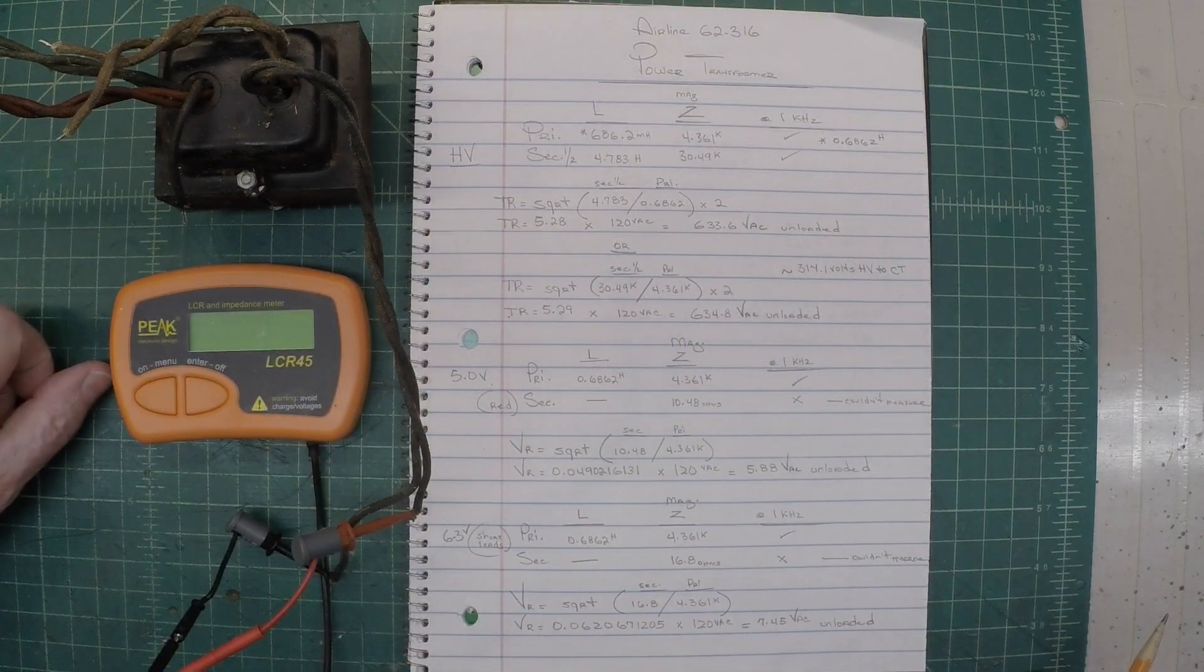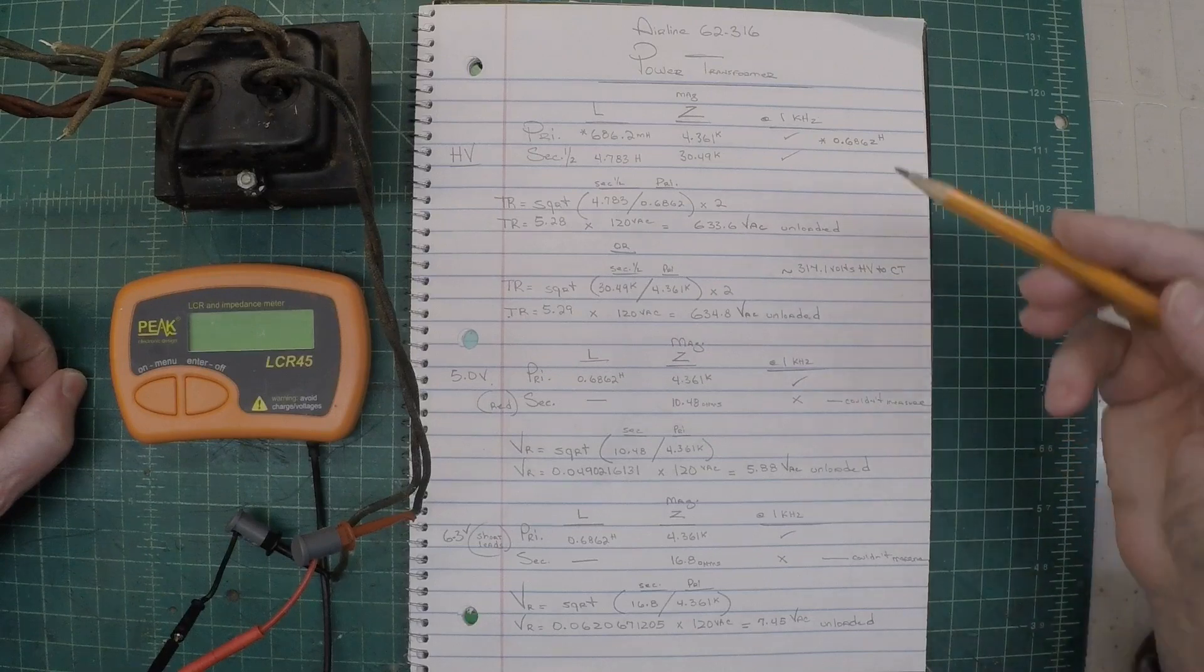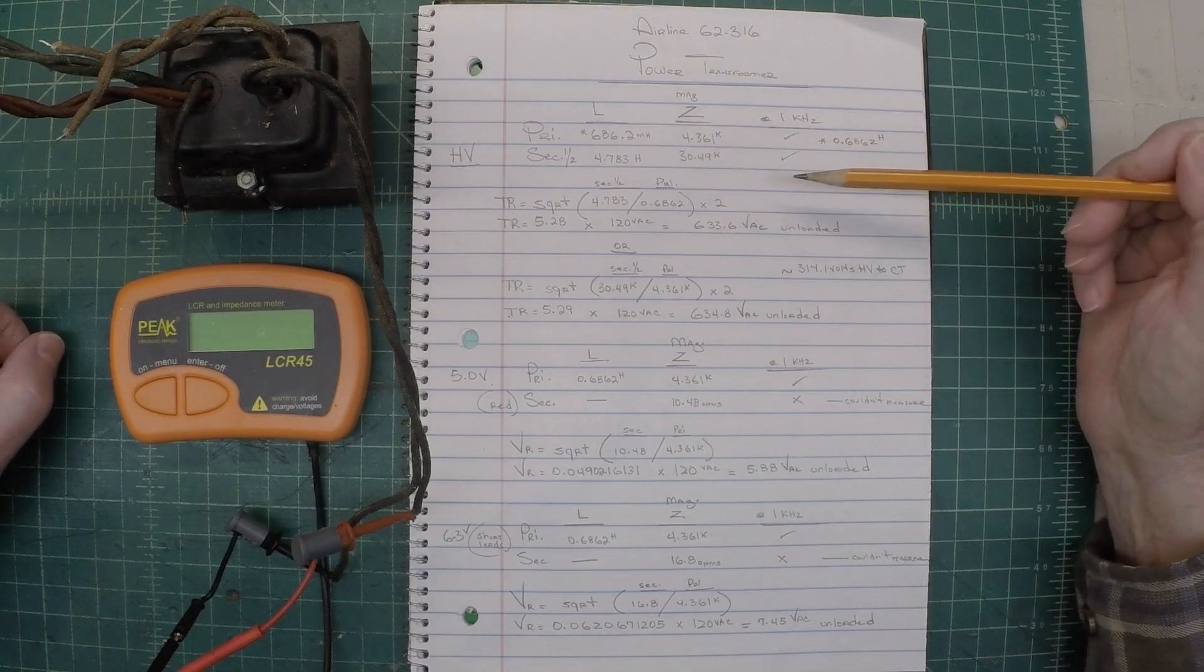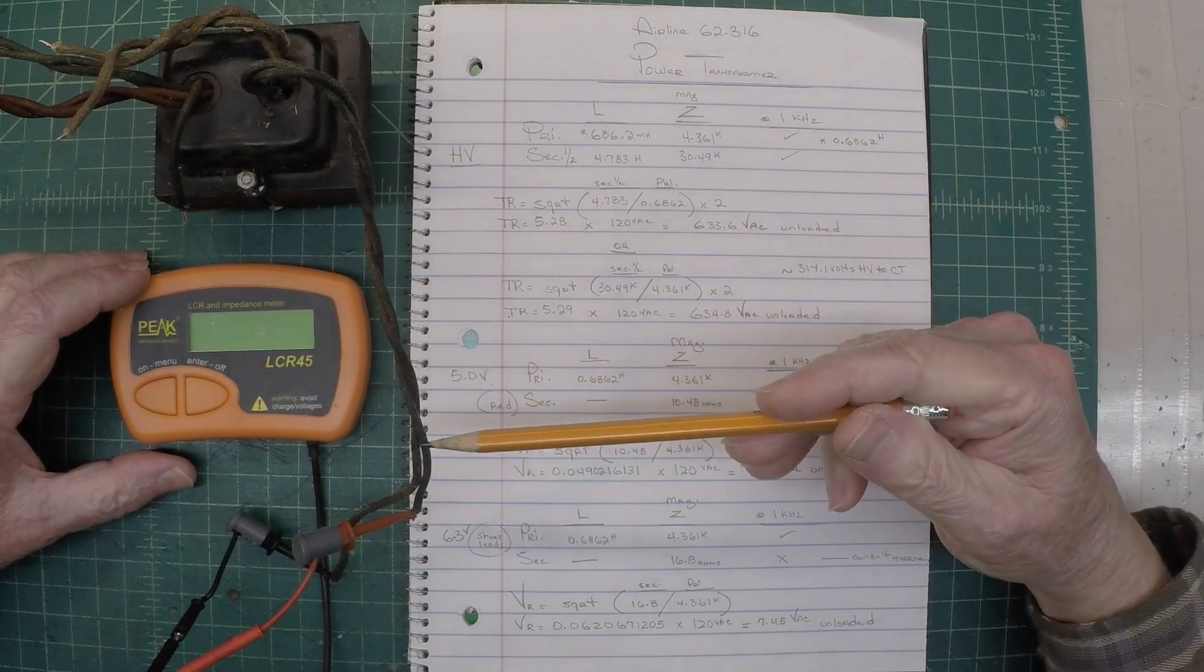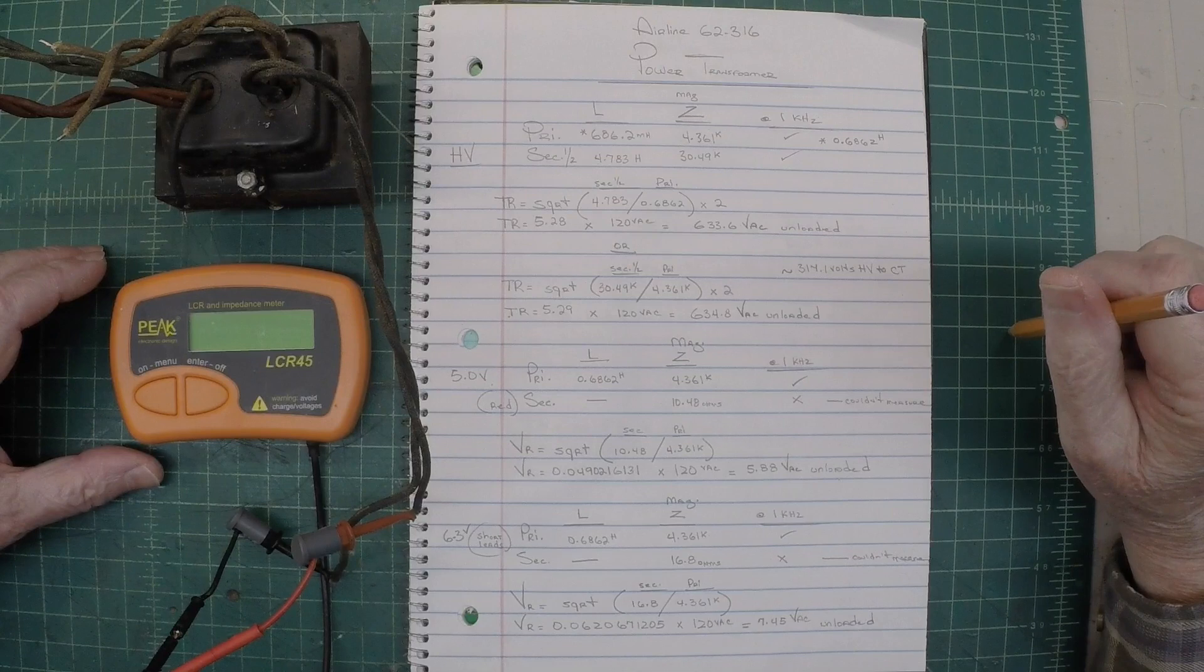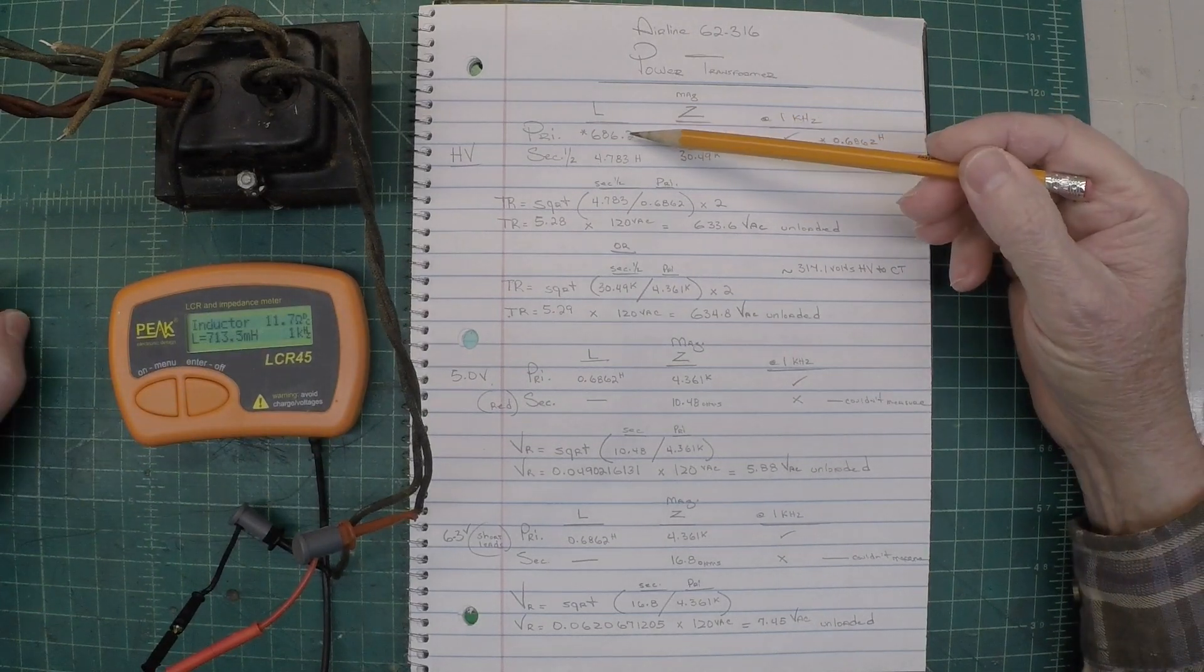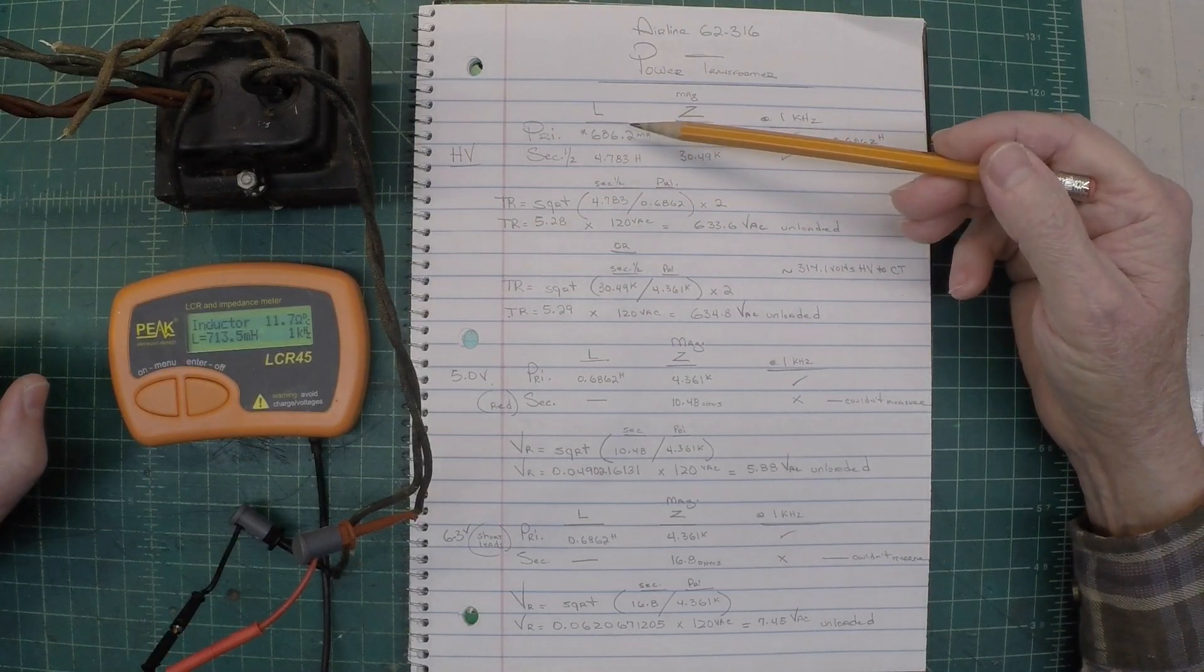As I mentioned, you can actually calculate the turns ratio or voltage ratio by using the impedance from the meter itself and or the inductance. So I've already done the math here, and I'll demonstrate that. I'm just hooking the LCR meter up here to the primary side. I took these readings early this morning. It was about 20 degrees cooler here in the shop, and sometimes that will impact the measured results. So we'll stick with these numbers since I've already recorded those.